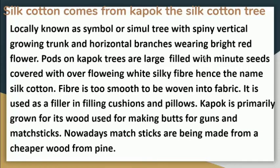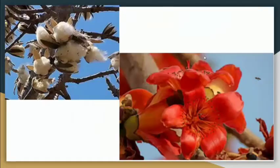Next is silk cotton. This fiber is known as silk cotton fiber from the Kepo or silk cotton tree, locally known as simul tree. It has spiny vertical growth strands and horizontal branches bearing bright red flowers. Pods of the Kepo tree are large and filled with minute seeds covered with overflowing white silky fiber, hence the name silk cotton. It is quite lustrous and soft but too smooth to be woven into fabric, so it is used as filler in cushions and pillows. Kepo is primarily grown for its wood, used for making butts for guns and matchsticks.